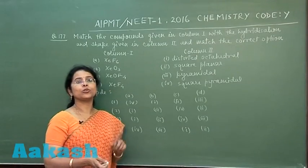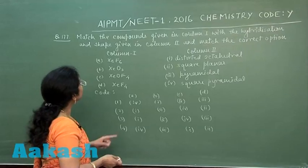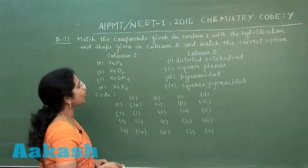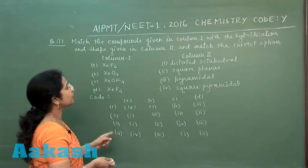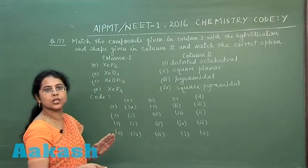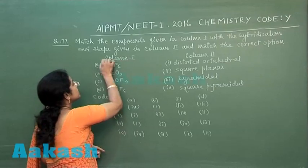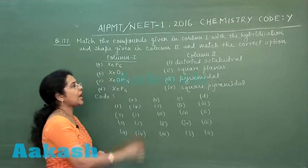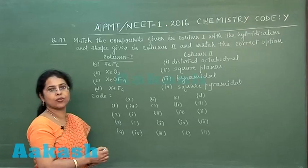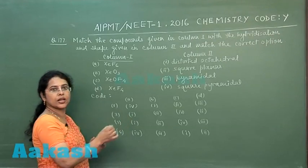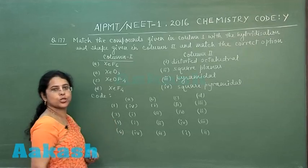Moving to question number 177: match the compounds given in column 1 with the hybridization and shape given in column 2, and select the correct option. In column 1 some compounds are given, and in column 2 their shapes are given. We have to find the correct match and then choose the correct option.